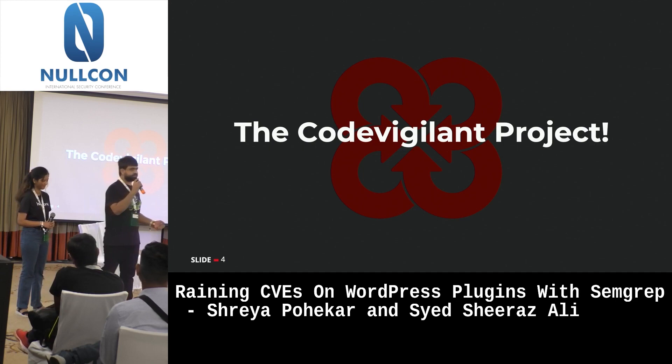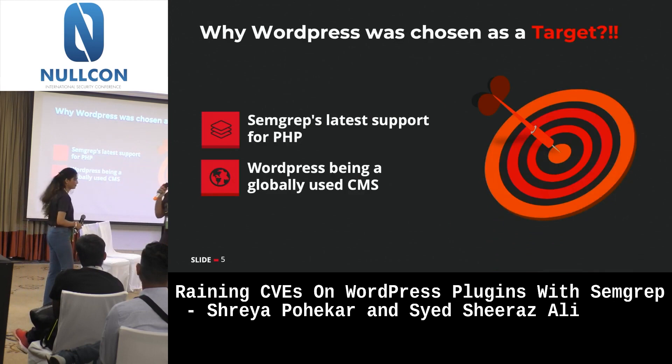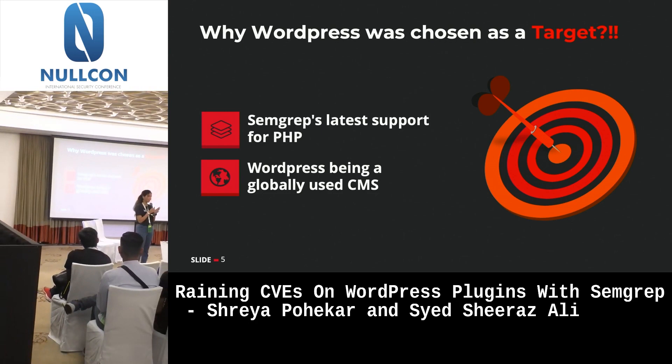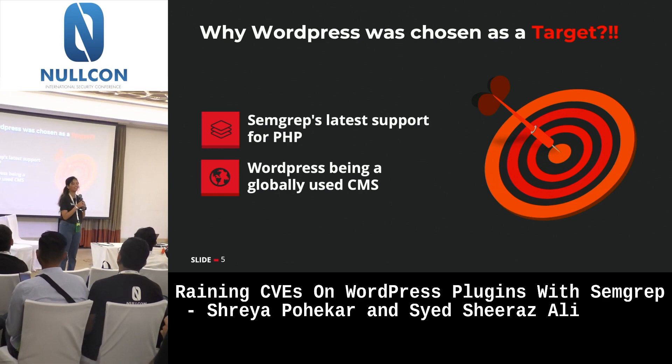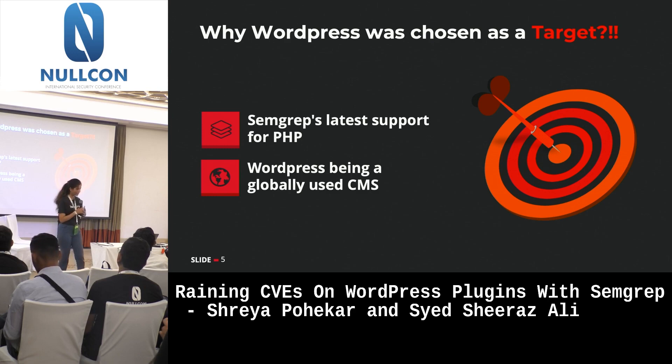Now Shreya will talk about why we chose WordPress as our target. Semgrep released the alpha version for PHP in 2020, and we knew that a lot of open source CMS projects are widely used. WordPress has a list of 80,000 plus plugins and we already knew that was a jackpot — that's why we chose WordPress.